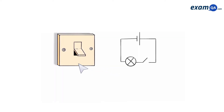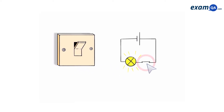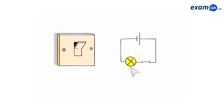Let's say you want to turn on the lights. To do that, you have to press a switch. That switch is part of a circuit. Once pressed, it closes and completes the circuit, and any components that are in the circuit, such as a light bulb, will then turn on.